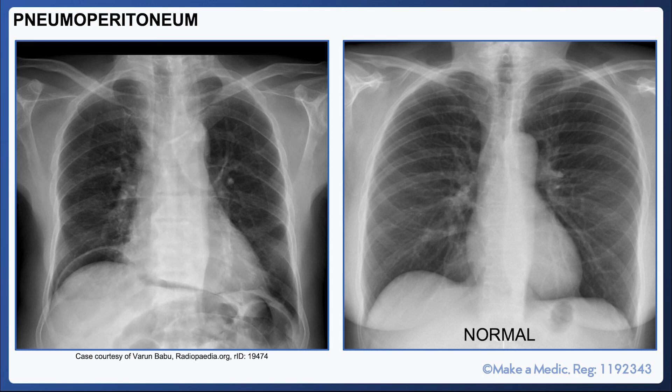In patients presenting with acute abdominal pain, an erect chest X-ray may be requested to check for air under the diaphragm. The presence of air under the diaphragm is suggestive of a perforation. It may also be seen in post-operative patients who have undergone a laparoscopic procedure, as carbon dioxide gas is used to inflate the abdomen.